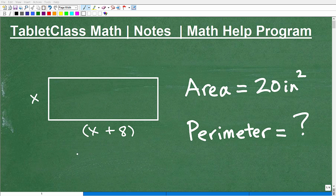Okay, let's get into this problem. You can see here I have a rectangle, and this side is x, and this side is x plus 8. And I'm told that the area of this rectangle is 20 square inches. But I want to find the perimeter of this rectangle. So how do we do this problem?